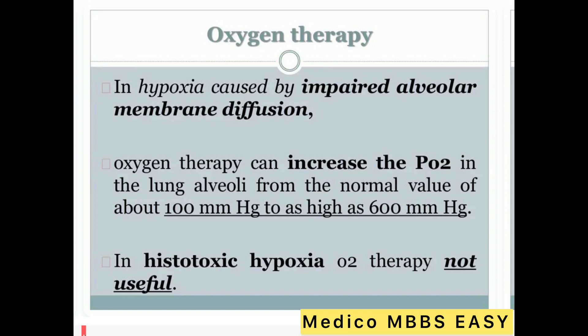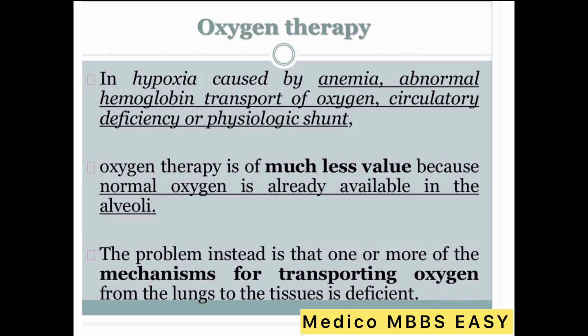In hypoxia caused by impaired alveolar membrane diffusion, oxygen therapy can increase the partial pressure of oxygen in the lung alveoli from the normal value of about 100 mmHg to as high as 600 mmHg. In histotoxic hypoxia, oxygen therapy is not useful.